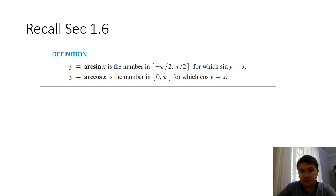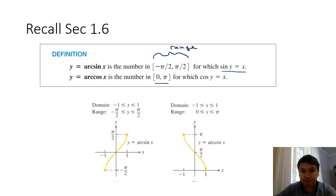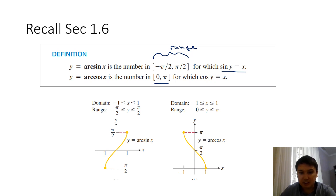This is how we define the arcsine. Arcsine is a number between −π/2 and π/2 — that's the restriction for which sine y equals x, and this is the range for arcsine. The range for arccosine is [0, π]. So we need to know this, and remember these graphically as the graphs of the inverses.